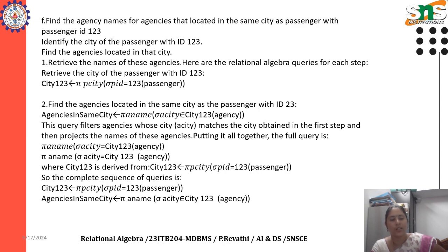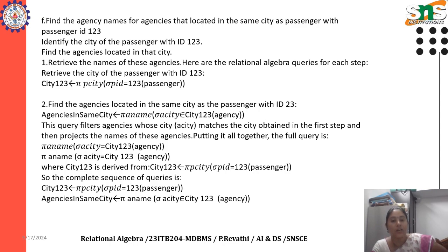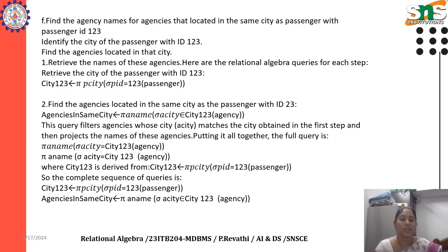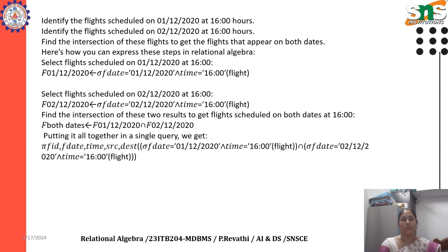Putting it all together, the full query is: pi a_name, selection a_city = city_123 of agency. City_123 is derived from: city_123 := pi PCD of (selection PID = 123 of passenger). The complete sequence is: city_123 := pi PCD ( selection PID = 123 of passenger ); agencies_in_same_city := pi a_name ( selection a_city ∈ city_123 of agency ).